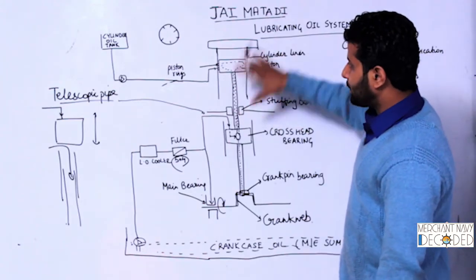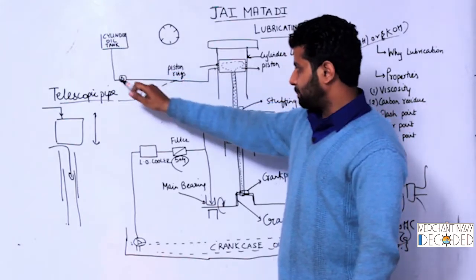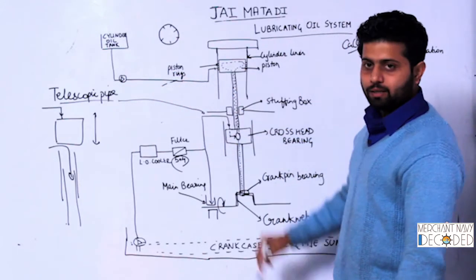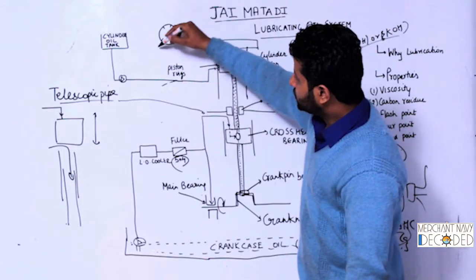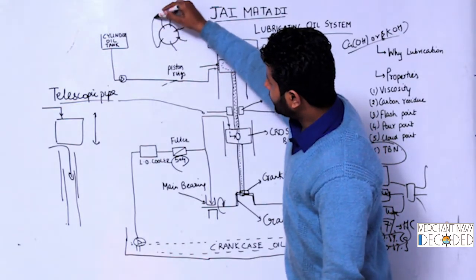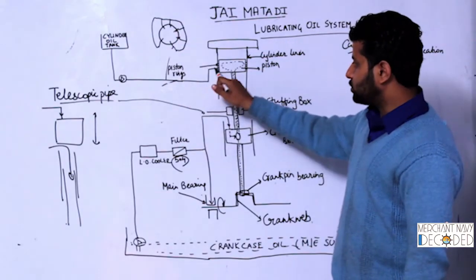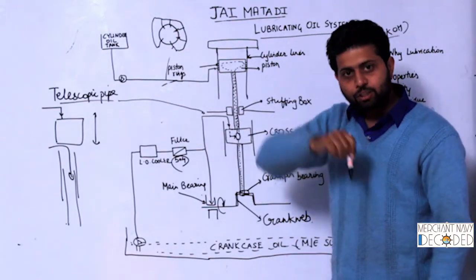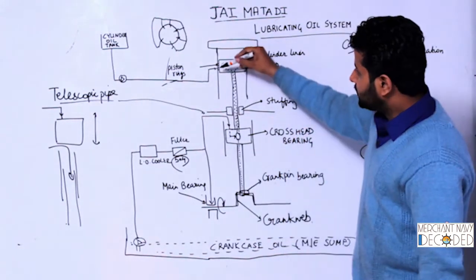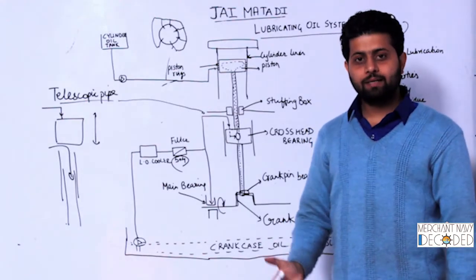We also have a separate oil — cylinder oil — supplied by a separate pump. This oil goes into the liner, which has six holes circumferentially arranged. The oil enters through all six branches connected together to the pump. This cylinder oil is there to lubricate between the piston rings and the cylinder liner.